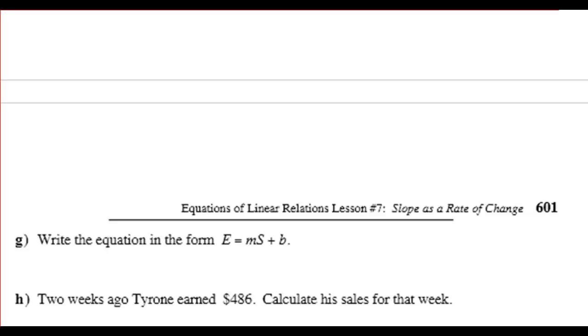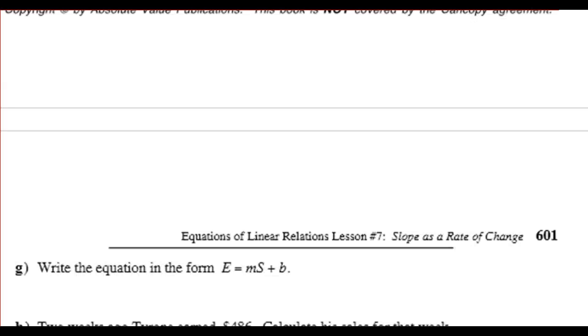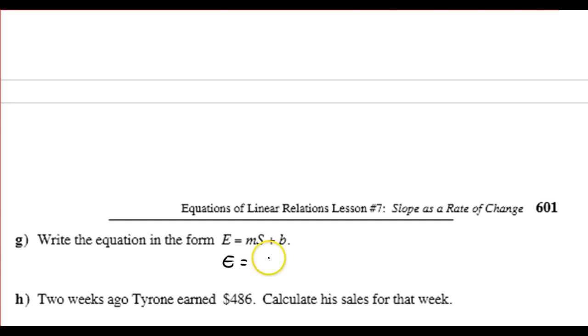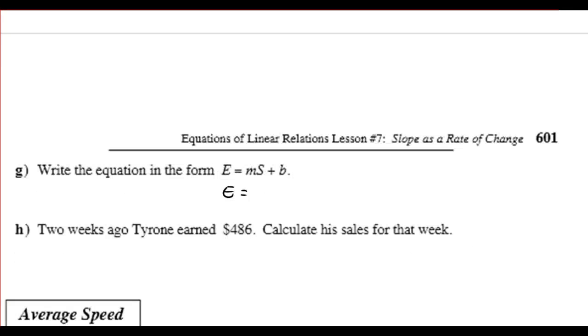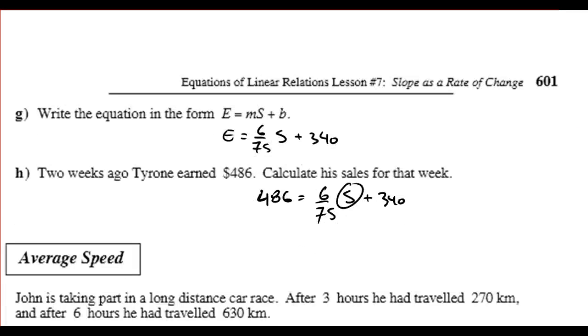Write the equation in the form of E equals MS plus B. Well, the earnings equals, what was it, 6 over 75. So, 6 over 75 times the sales plus his base salary of 340. Two weeks ago, Tyrone earned $486. Calculate his sales for the week. So, two weeks ago, if he earned $486, how much did he sell? So, just solve for S there. And I'm going to let you go ahead and finish that off.